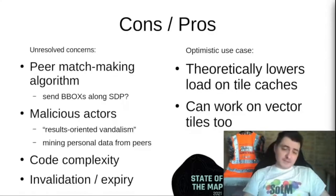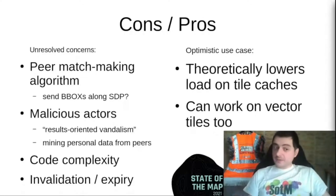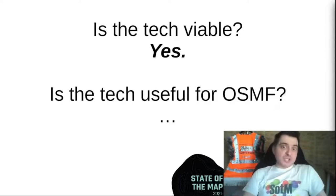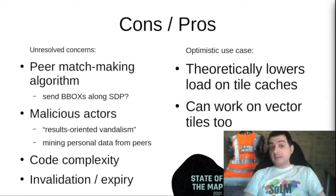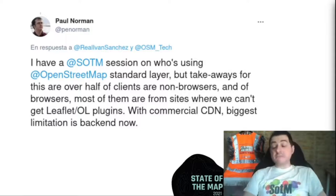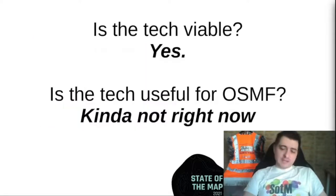So it works. There are a lot of things that should be finished before making this useful and public. I don't have time for it, so I'll just leave this here. Is the tech viable? I think it is. Is it useful for OSMF for actually distributing OpenStreetMap map tiles and perhaps changing the tile policy? I'm not so sure, because first there are a lot of hard-to-resolve concerns, and second, I talked briefly with Paul Norman from the OSM Tech team and I'm not really convinced that peer-to-peer tiles are a necessity right now. Maybe in the future - maybe it's an idea worth exploring.